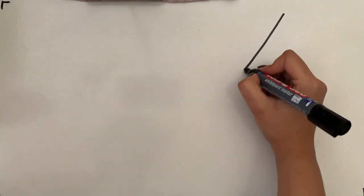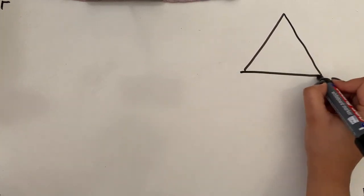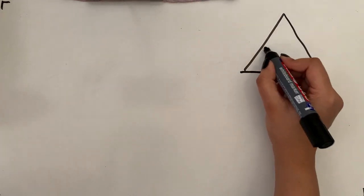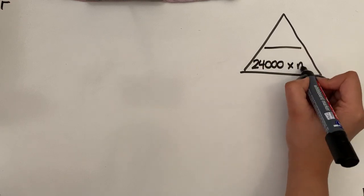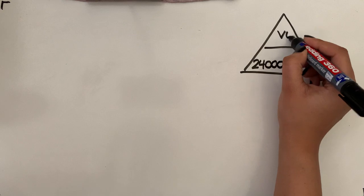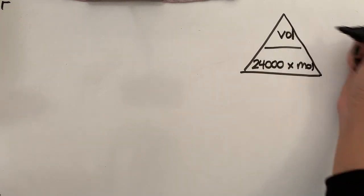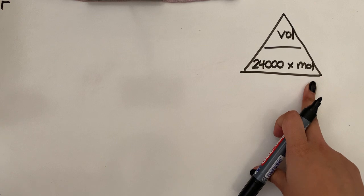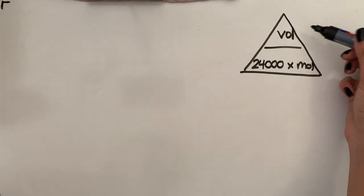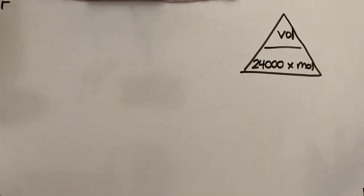So if you remember this triangle, that should help. So basically one mole of any gas is always going to be 24,000 centimeters cubed, and that's going to give you the volume at the top. So 24,000 times the moles is going to give you the volume that it occupies.